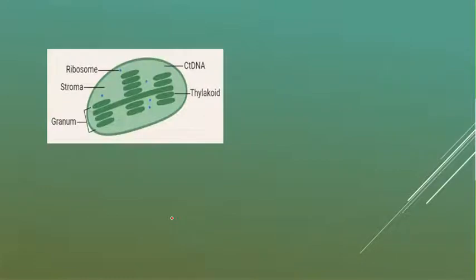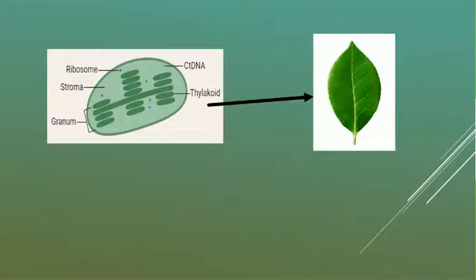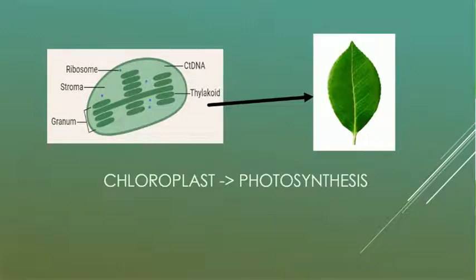Chloroplast is an organelle which is present in plant cells, especially in the leaves, and it is responsible for the process of photosynthesis. Photosynthesis is a process in which food is prepared in the presence of sunlight, while carbon dioxide and water are combined to form food. The word photo represents sunlight.